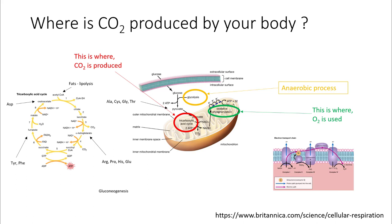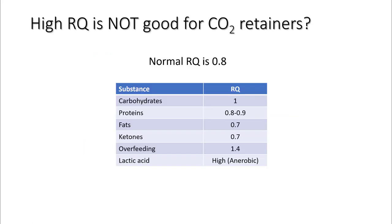Different foods have different respiratory quotients because they enter the metabolic cycle at different places. For example, fats undergo lipolysis to produce acetyl-CoA, while various proteins or amino acids enter at different points — some like alanine and cysteine enter at the level of pyruvate, while others enter the Krebs cycle at a different point. A high respiratory quotient is not good for CO2 retainers, because you make more CO2 for the same amount of oxygen.